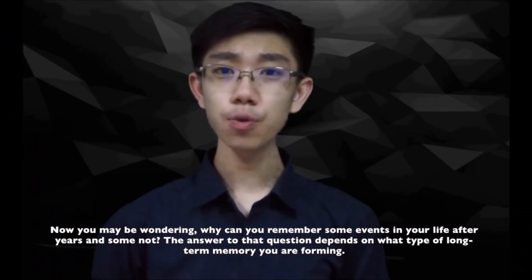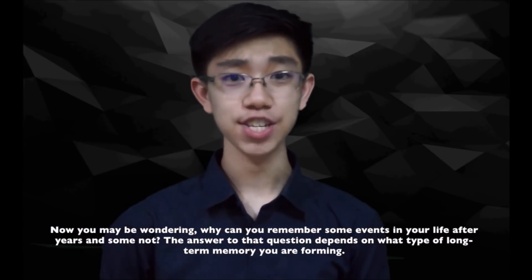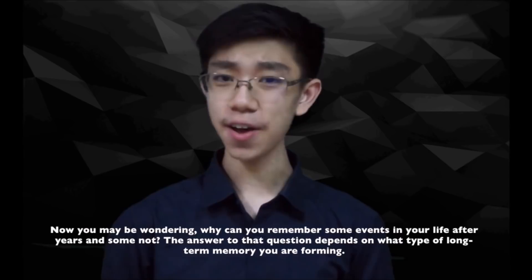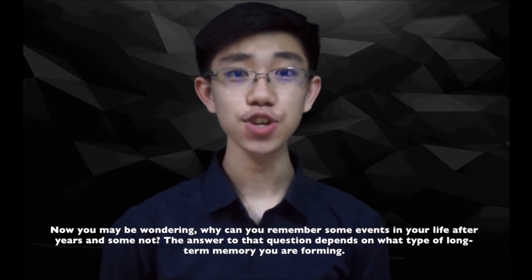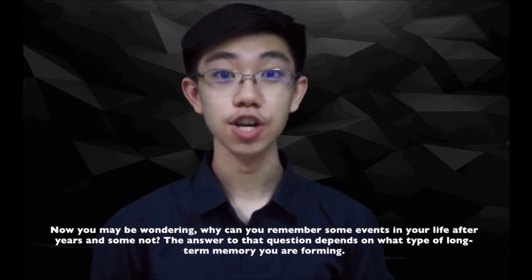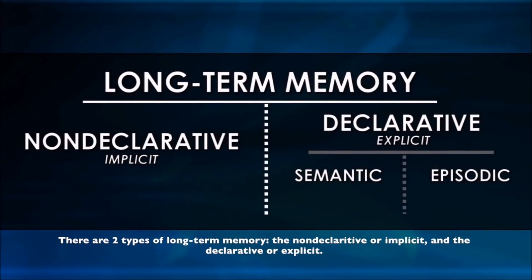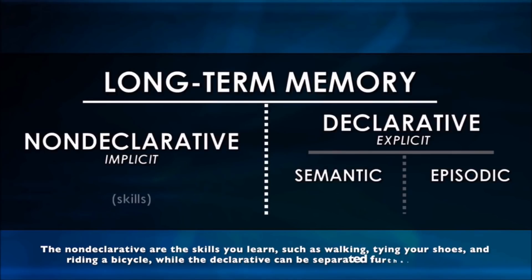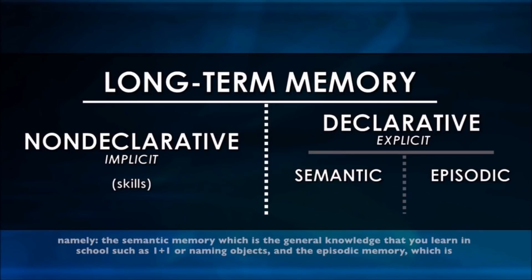Now you may be wondering why you can remember some events in your life after years, and some not. The answer depends on what type of long-term memory you are forming. There are two types of long-term memory: non-declarative or implicit, and declarative or explicit. The non-declarative covers skills you learn, such as walking, tying your shoes, and riding a bicycle, while the declarative can be separated further into two types.